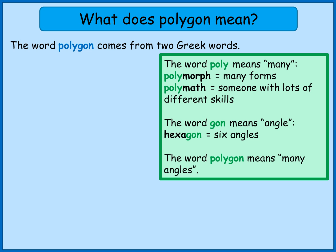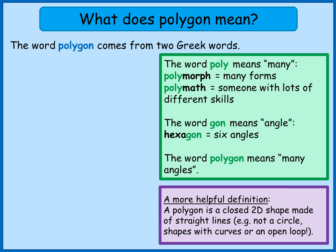That's what it literally means, but that's not a particularly useful definition. It's more helpful to think about it like this: a polygon is a closed 2D shape — not a 3D shape. It's closed, which means it's a complete shape with no gaps. A shape with an entire side not filled in would be open, so that's not a polygon. A polygon has to be a closed shape made of straight lines, so a circle, or any shape with a curved edge, isn't a polygon.